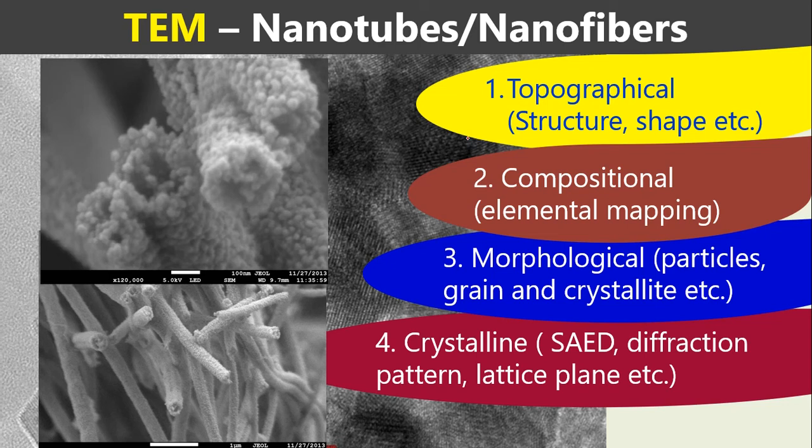Let's discuss transmission electron microscopy images of nanotubes or nanofibers. You can see the fibers are porous and hollow, so you can call them nanotubes or hollow nanofibers.